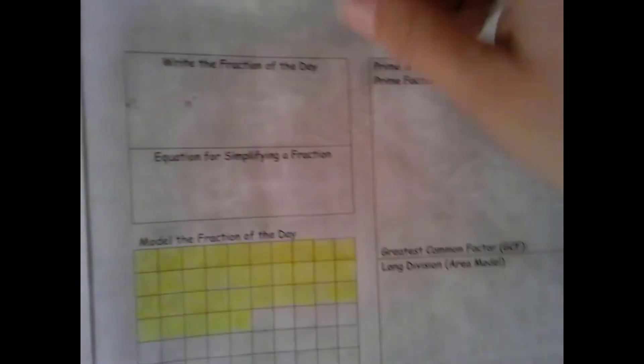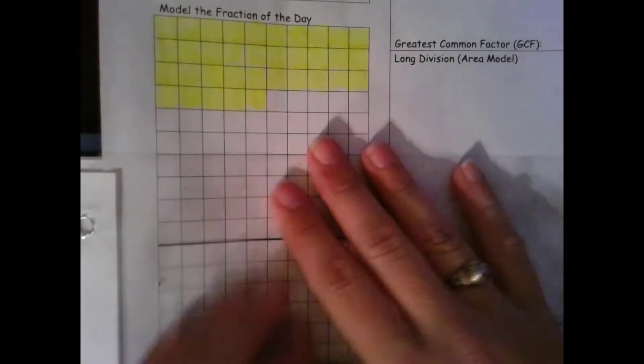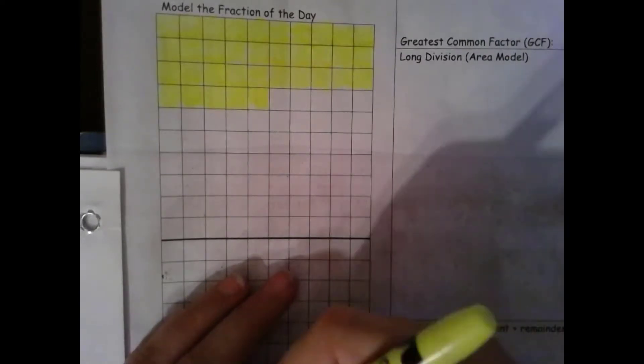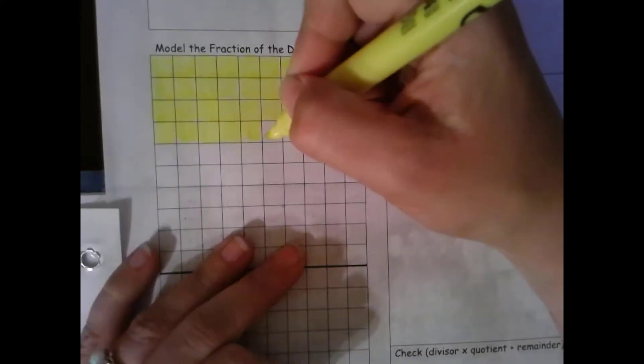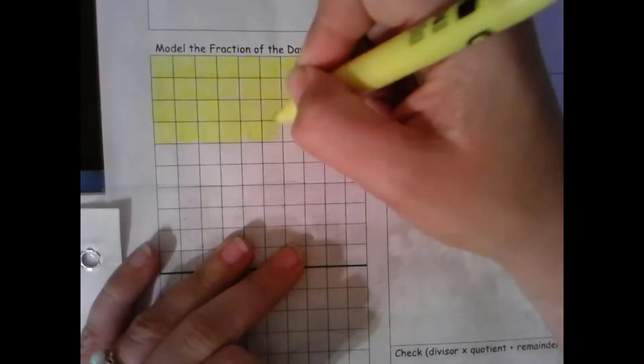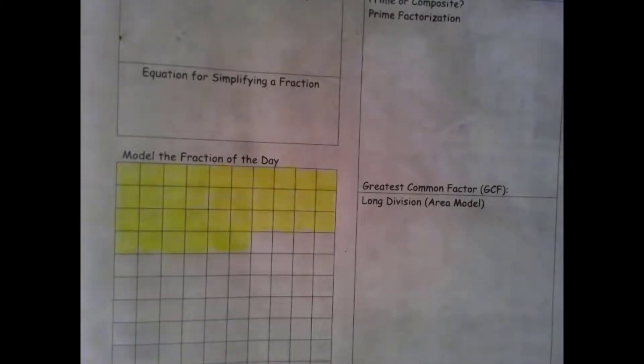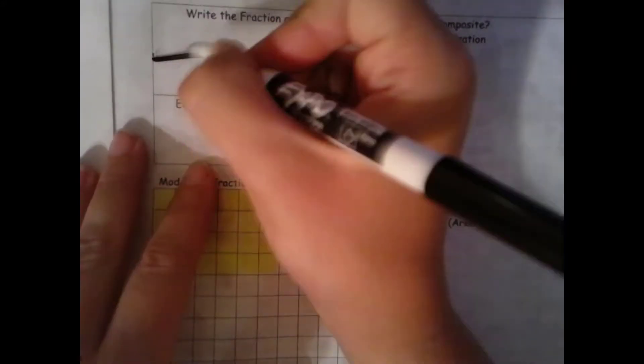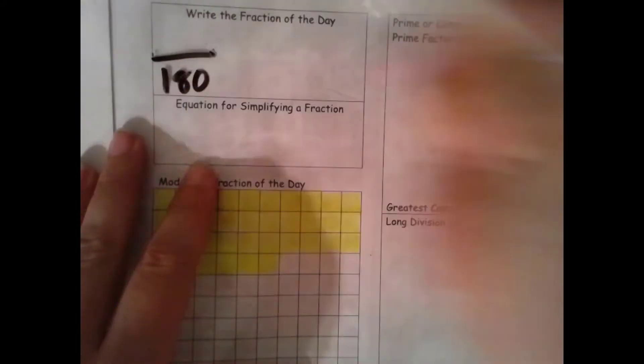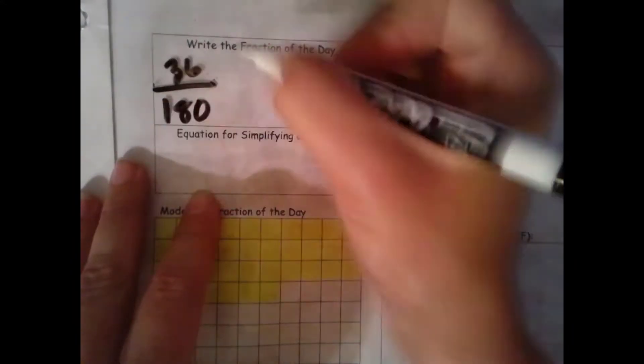Welcome to day 36 of our school year. Let's get this filled in. Our beginning fraction: we have a total of 180 school days and we are on day 36.